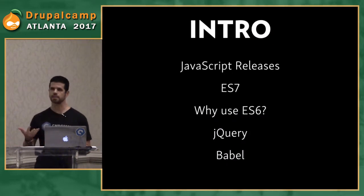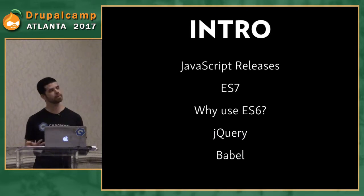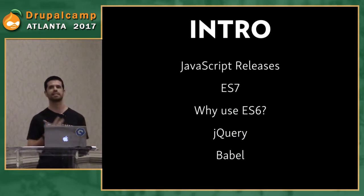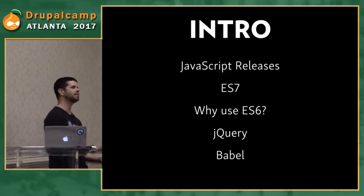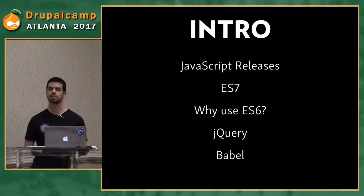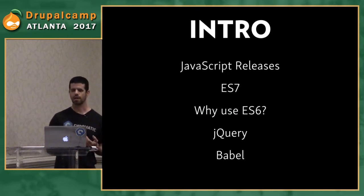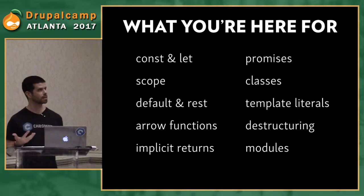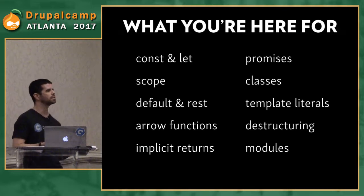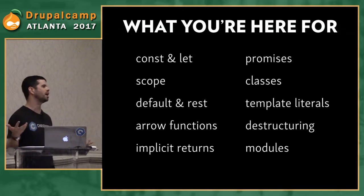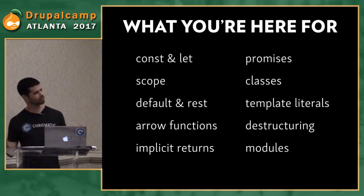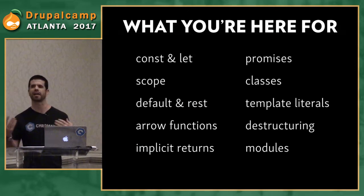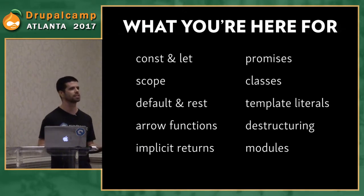Let's go over what we're going to talk about. First, a little intro. We're going to talk about JavaScript release cycles, ES7, and why use ES6 before we even get into it. We're going to touch on jQuery and Babel. And when we get into ES6, we'll cover const and let, scope, promises, classes, and a whole bunch of other cool stuff that ES6 can do.